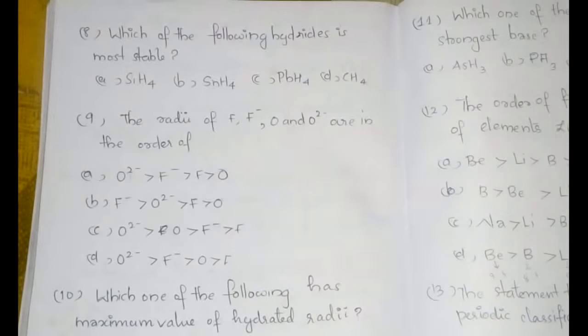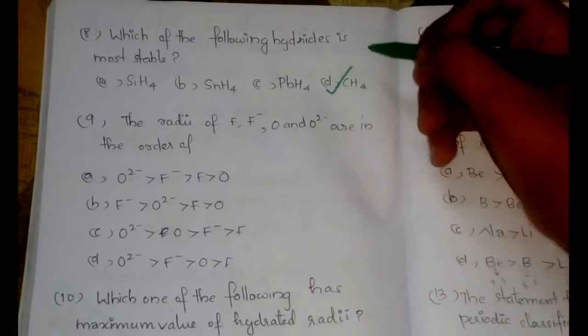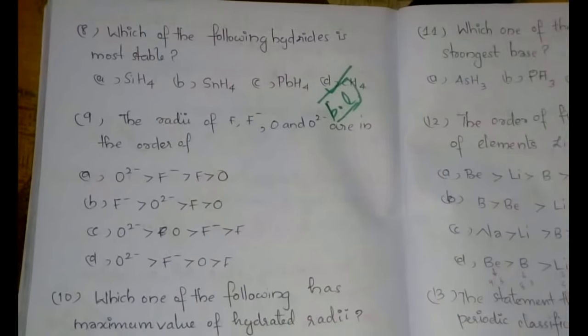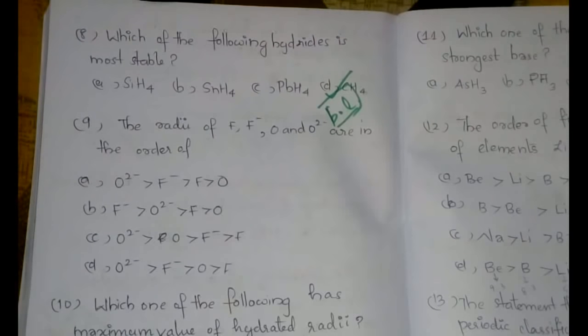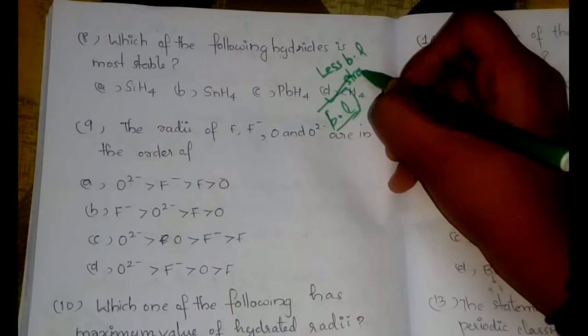The eighth question: which of the following hydrides is most stable? The answer is option D, CH4. The reason is bond length — due to the smaller size of carbon, the bond length will be smaller than in all other hydrides given. Shorter bond length means a stronger bond, and a stronger bond means a more stable hydride. So CH4 is the answer.